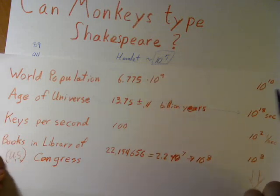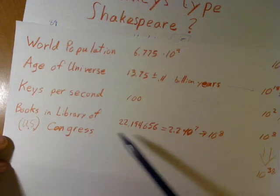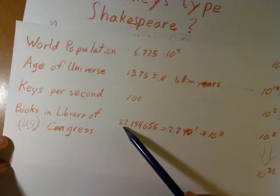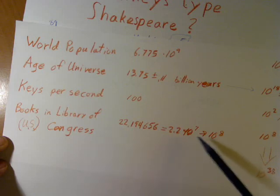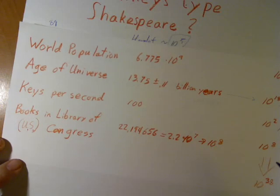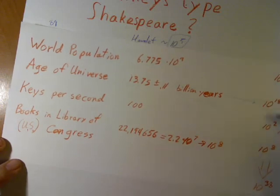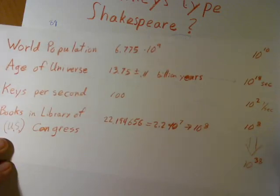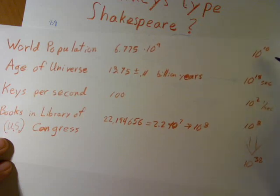But you know what? How many books are in the Library of Congress? We have some 22 million. Okay, let's round that up to 100 million. 10 to the 8th. So, we'll multiply each of these numbers. And we'll get 10 to the 32nd.